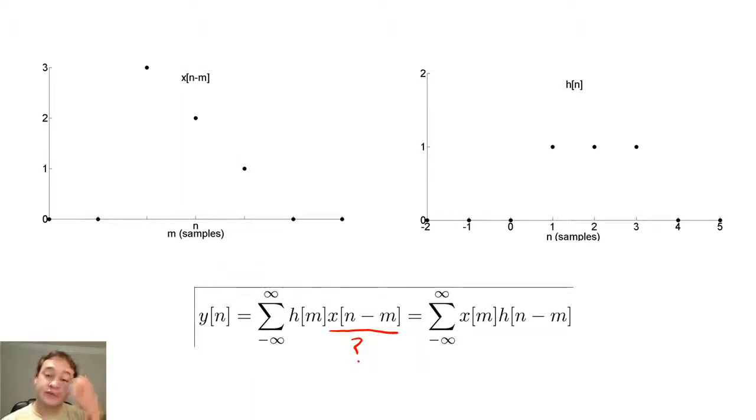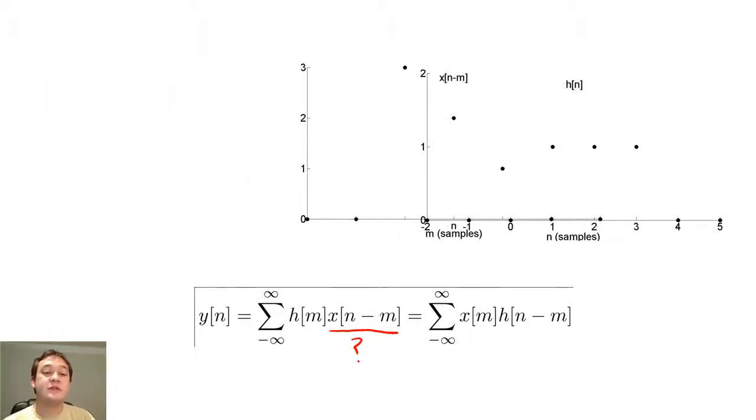So to show how this works, when n is less than 0, every sample of x of n minus m is being multiplied by 0. So y of n is 0 for n less than 0.